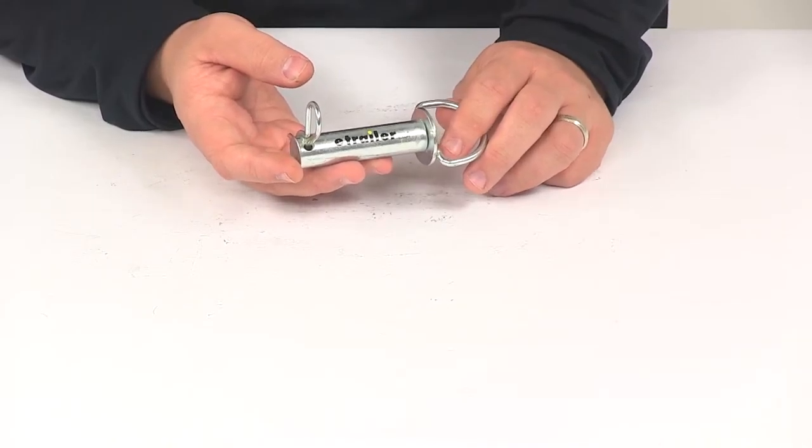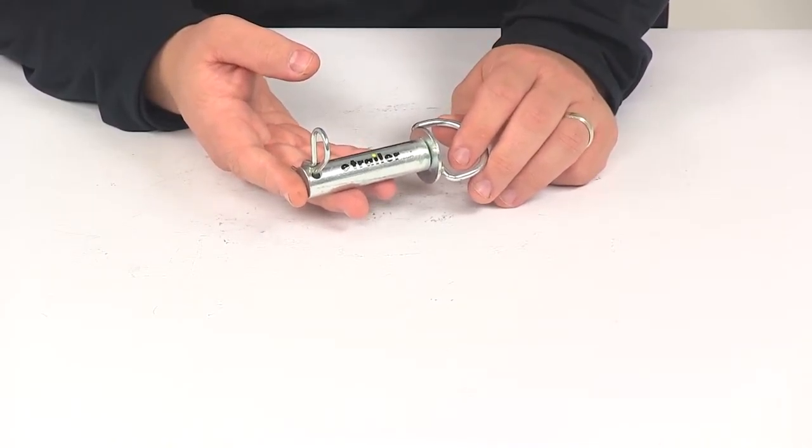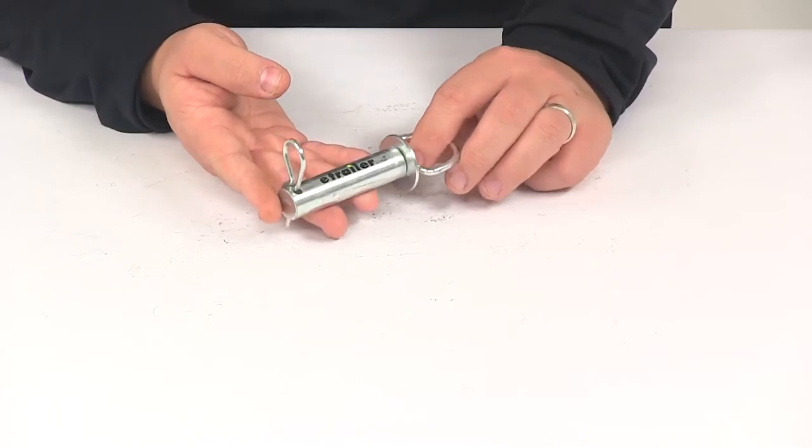Your hitch mounted clevis is sold separately. If you're in need of one or if you'd like to purchase a new one, you can find them right here at eTrailer.com.